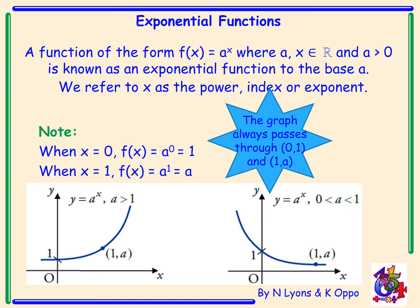Two types of exponential graphs: on the left hand side is when a is greater than one and on the right hand side is when a lies between zero and one. And you can see from both graphs, they both pass through (0,1) and (1,a).